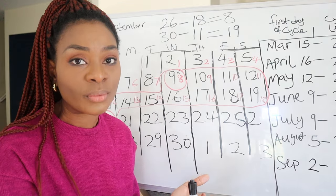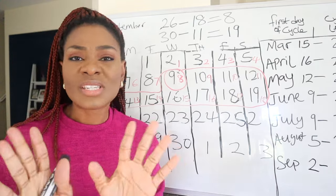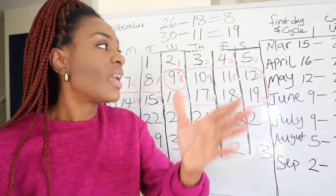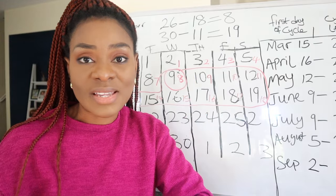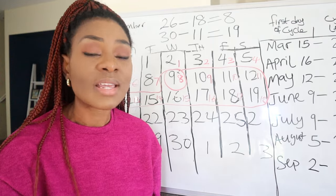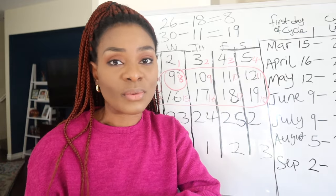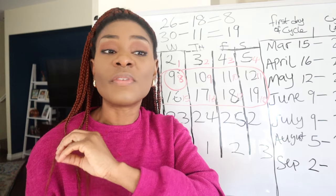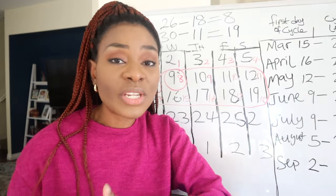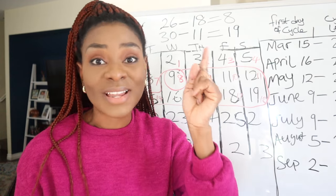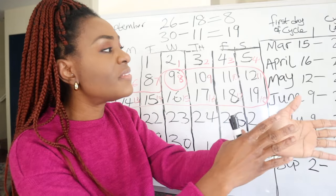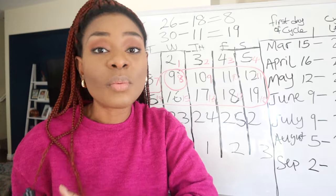If you have cycle length variation, this is how you calculate your fertile window. For those with irregular cycles, some experts say this method shouldn't be used, but others say it's okay to try. I recommend using it regardless, because number one it gives you valuable knowledge about your body, and number two you will start noticing patterns — whether there are long or short gaps between your cycles.